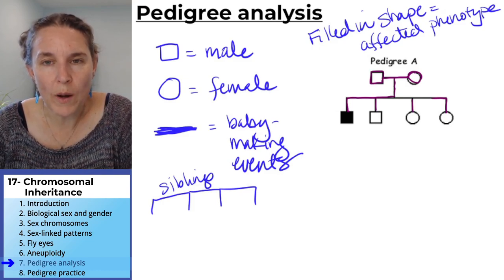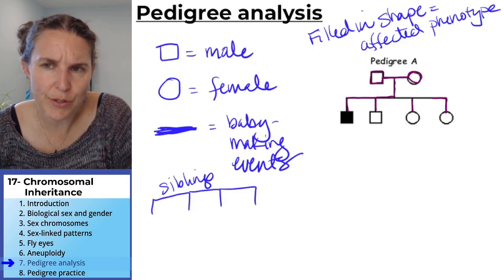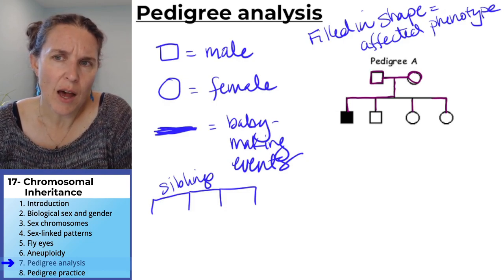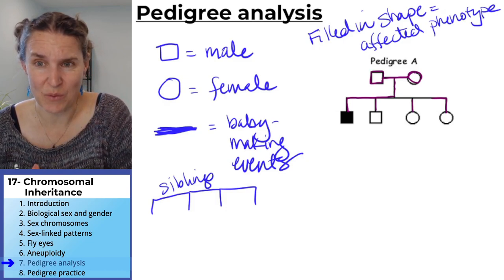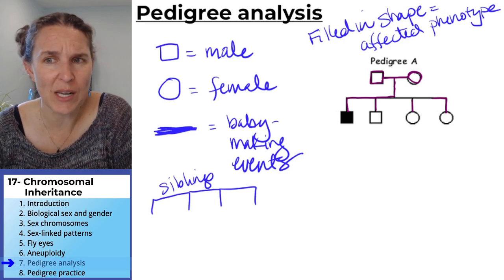One boy is affected. No girls are affected. Is there anything we can figure out about this condition? We don't even know anything about what it is.